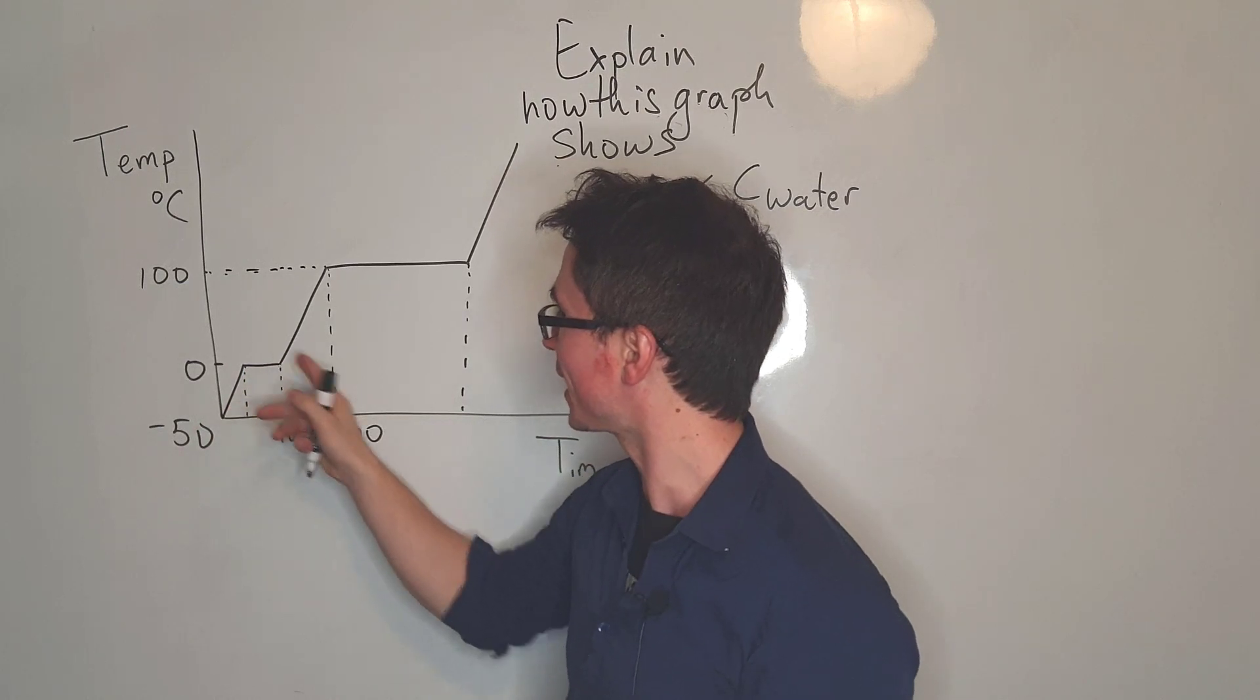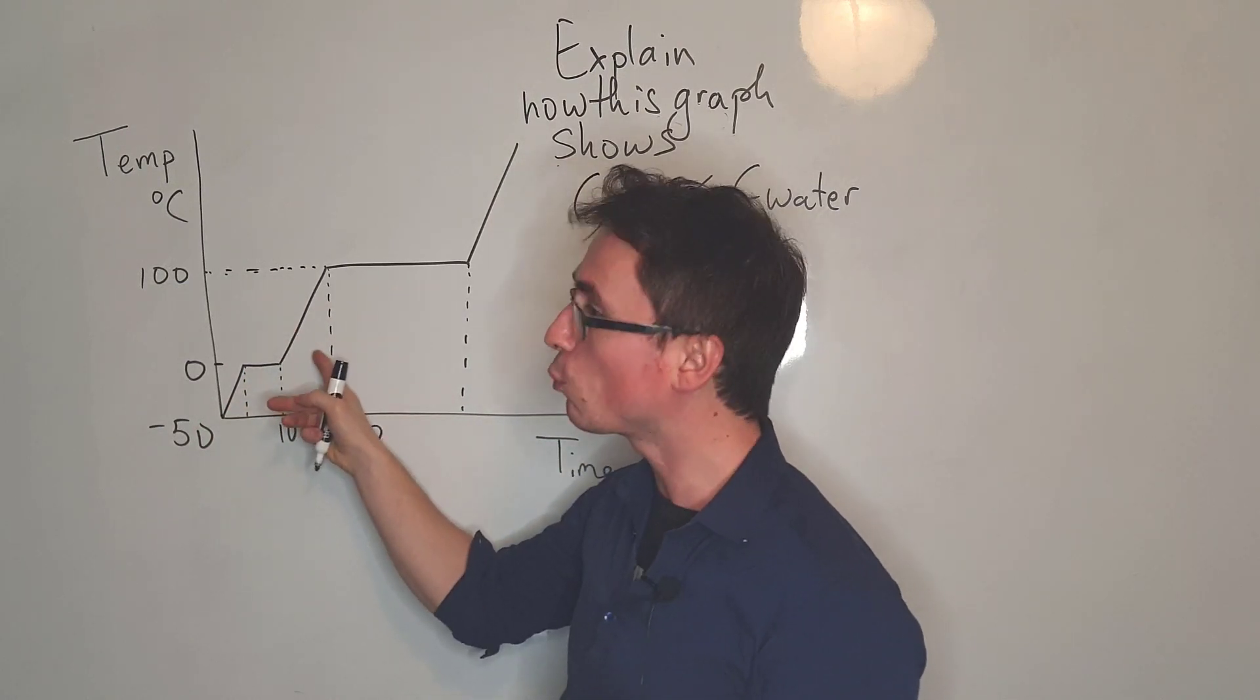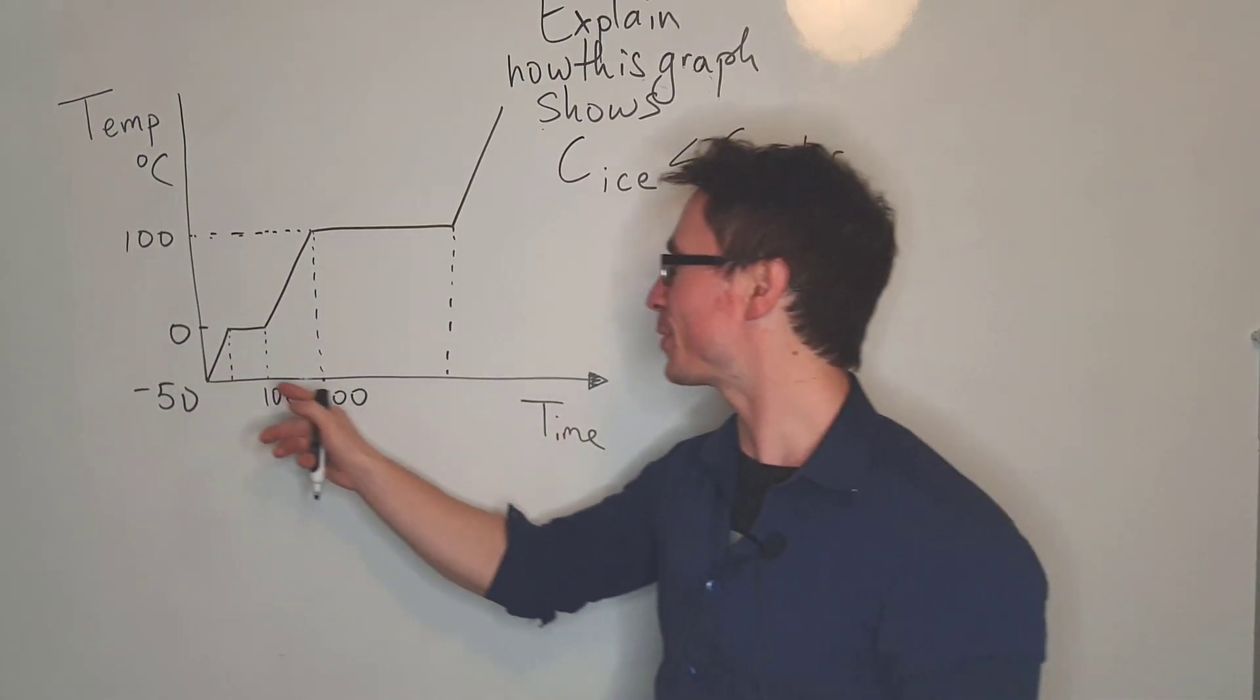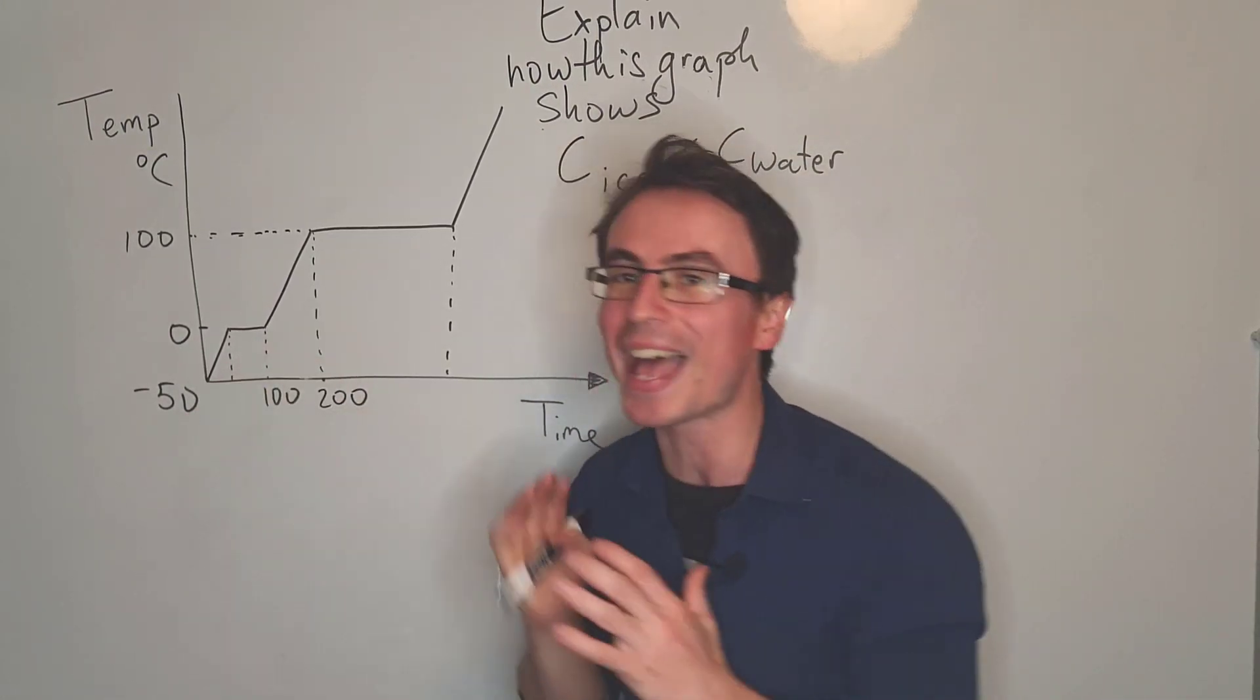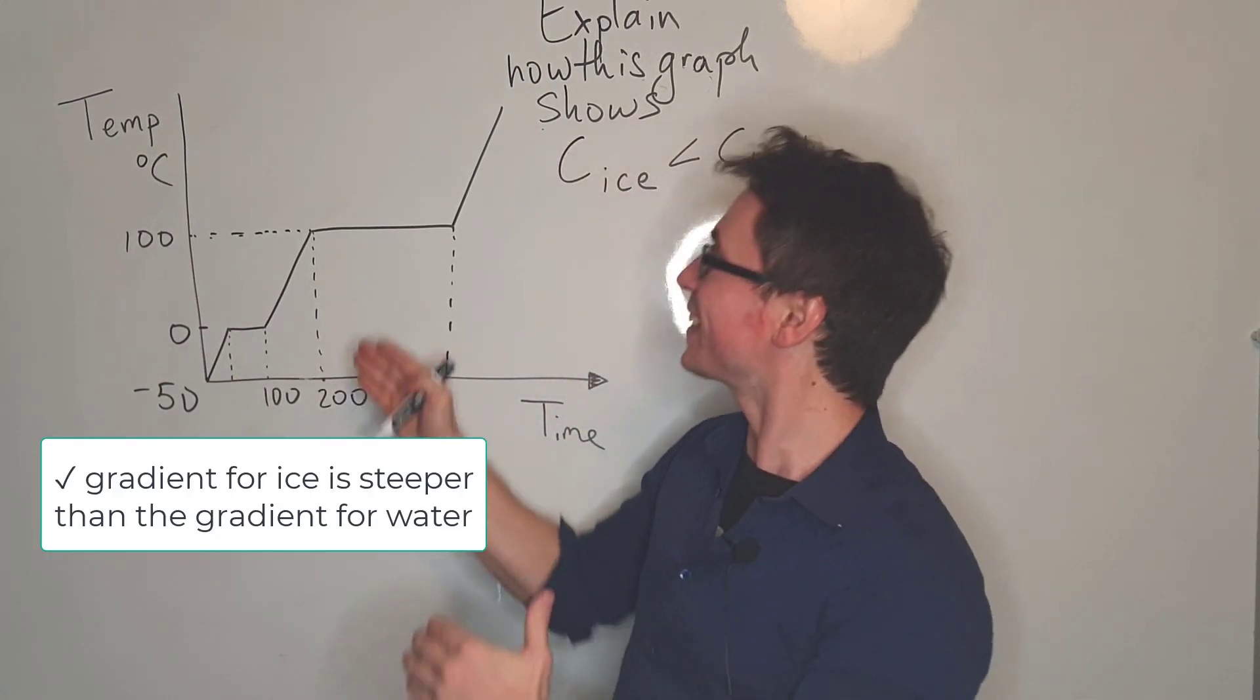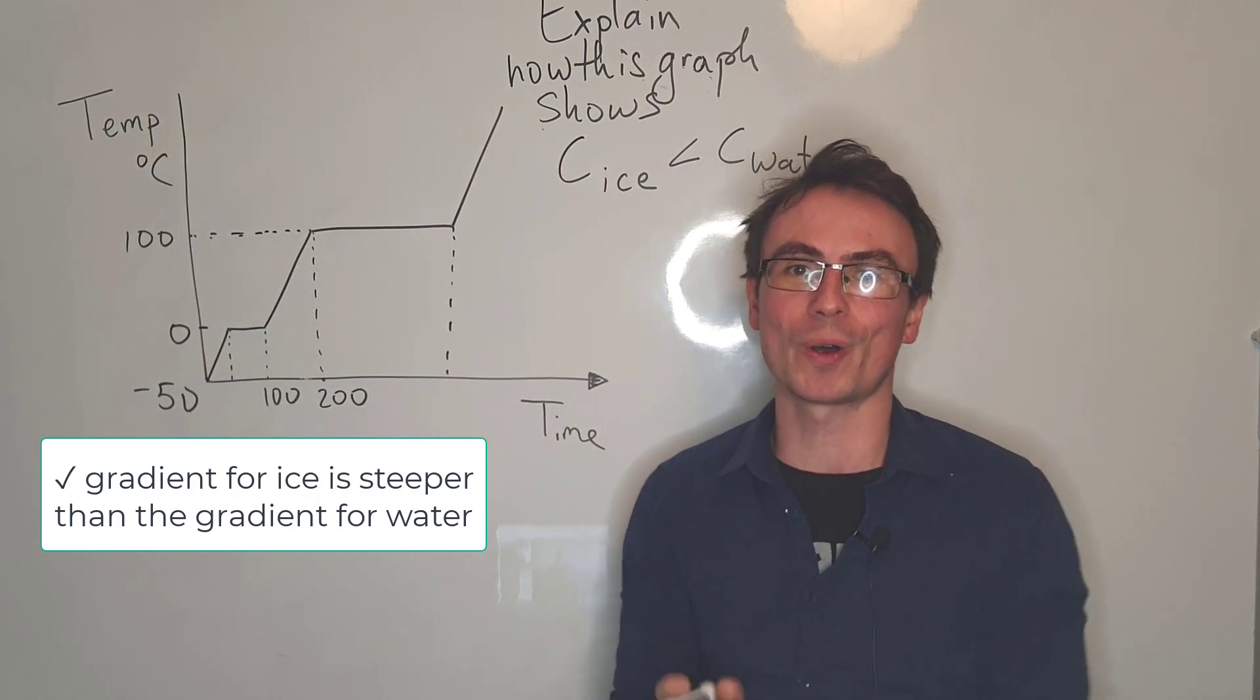Then the ice starts melting here and here we have water that is being heated up. Notice that there's one crucial difference between those two regions and that is the gradient. The gradient for ice is steeper compared to the gradient of the water.